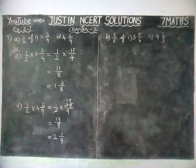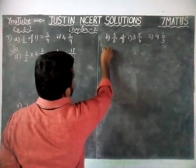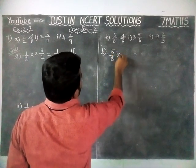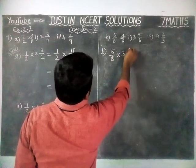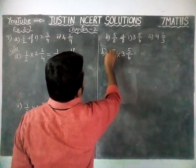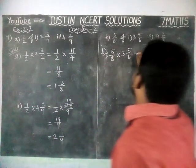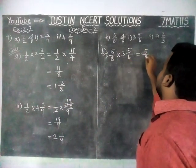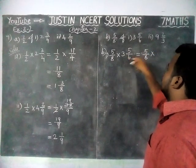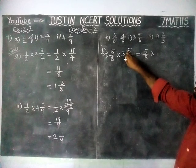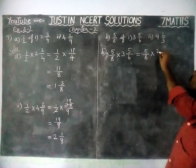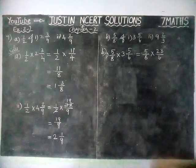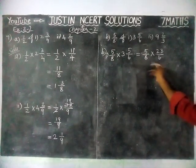Now, Option B, Roman numeral 1: 5/8 of 3 5/6. Same thing — we have to convert this mixed fraction into improper fraction. 5/8 into — 3 times 6 are 18, and 18 plus 5 is equal to 23 — divided by 6. If it is possible to simplify we can simplify, but here we cannot simplify, so we have to multiply as it is.